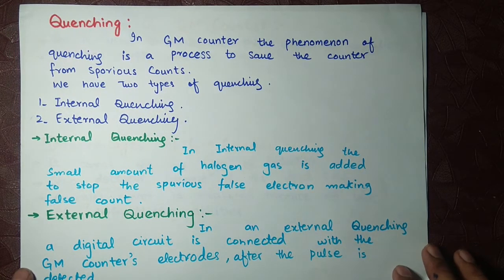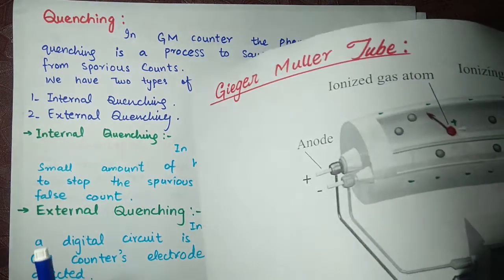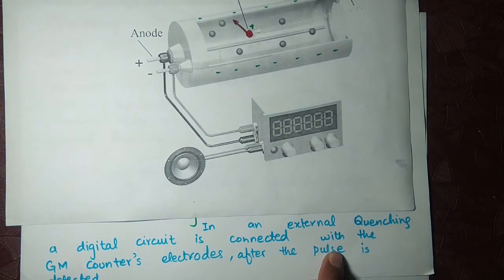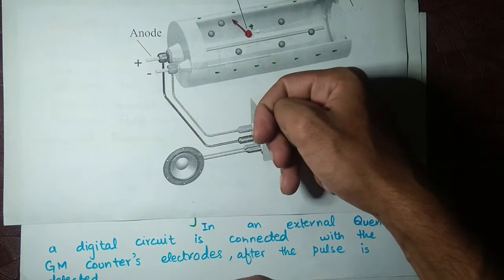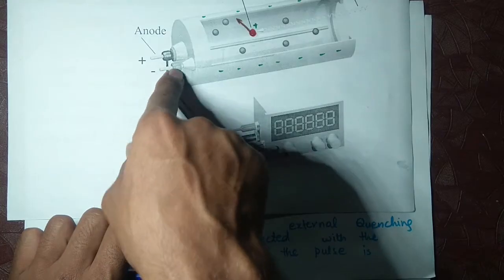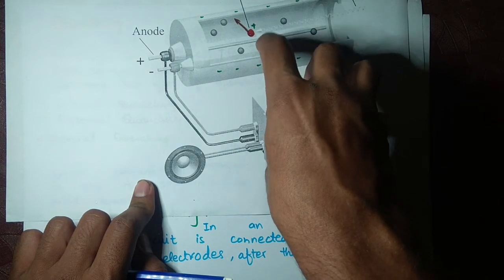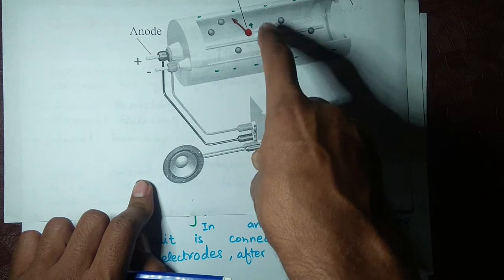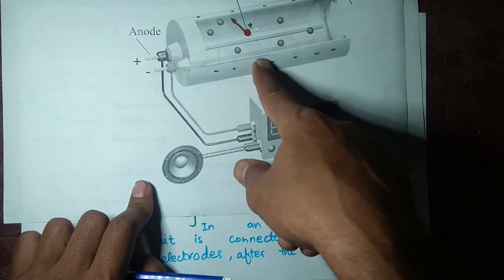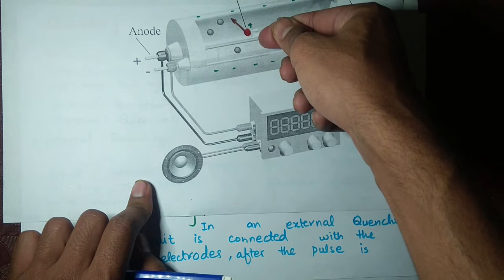After a pulse is detected, the external quenching circuit reverses the polarity. Where the anode was, it becomes the cathode, and where the cathode was, it becomes the anode. For example, an electron moving from cathode to anode — when we reverse polarity, the electron stops moving in that direction and goes back.